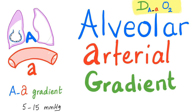Hey guys, it's your favorite medical channel, Medicosis Perfectionelis. We continue on our playlist called Pulmonology. In the previous video, we discussed the alveolar gas equation. Today, we'll talk about the alveolar arterial gradient, also known as the AA gradient.